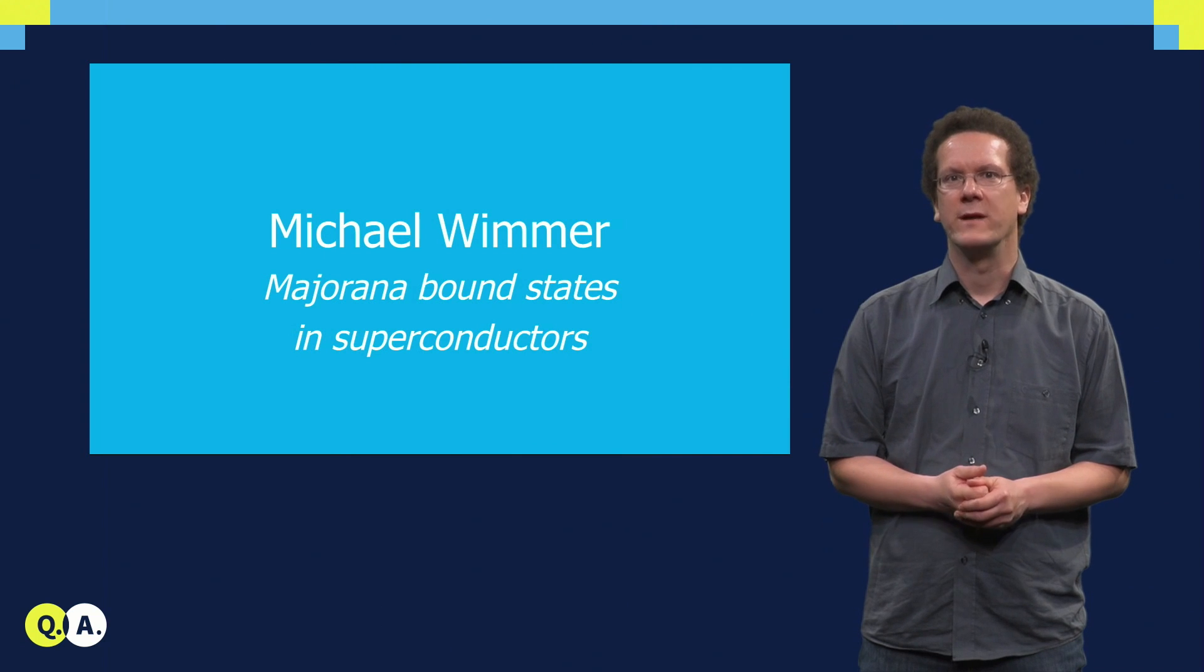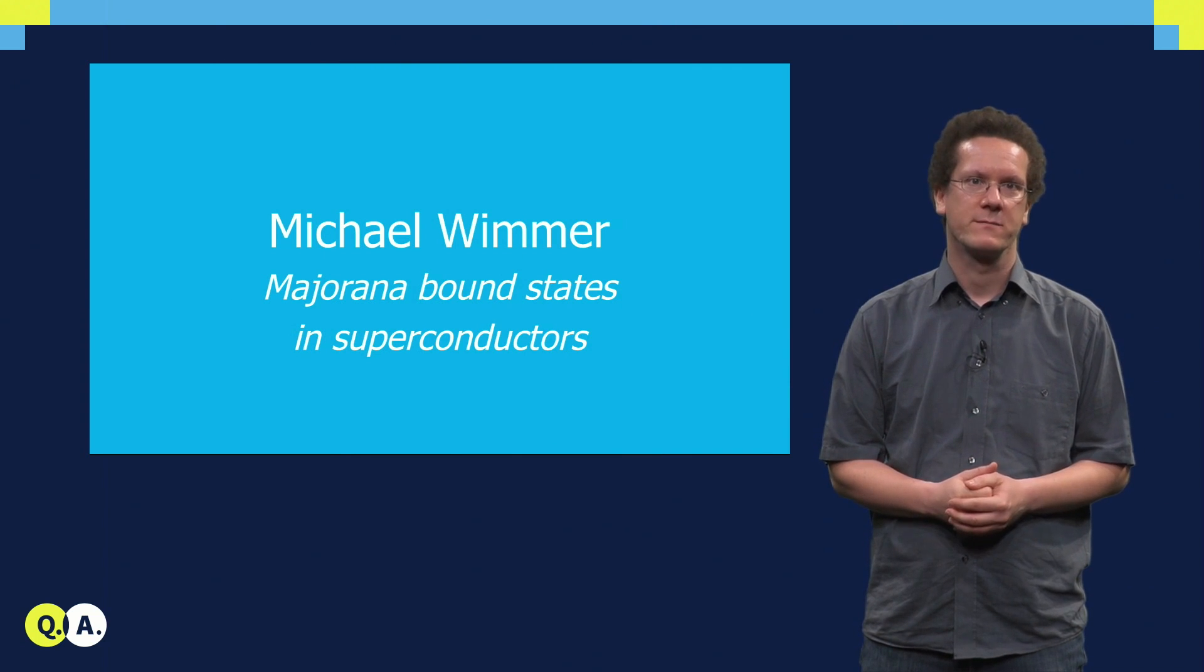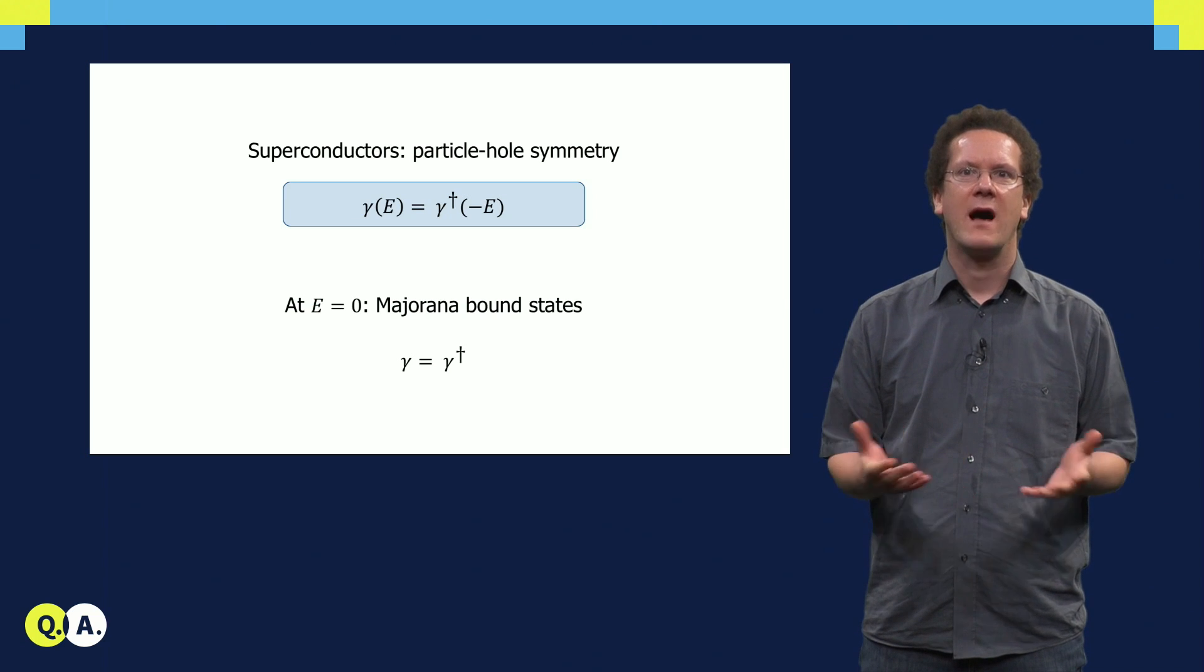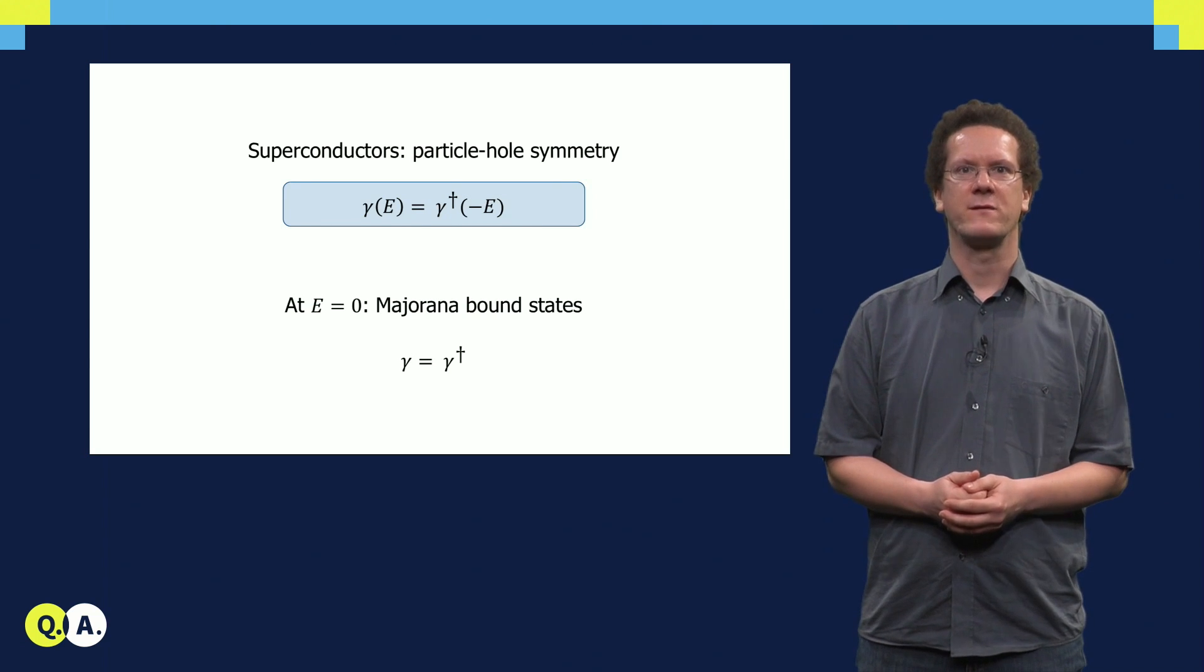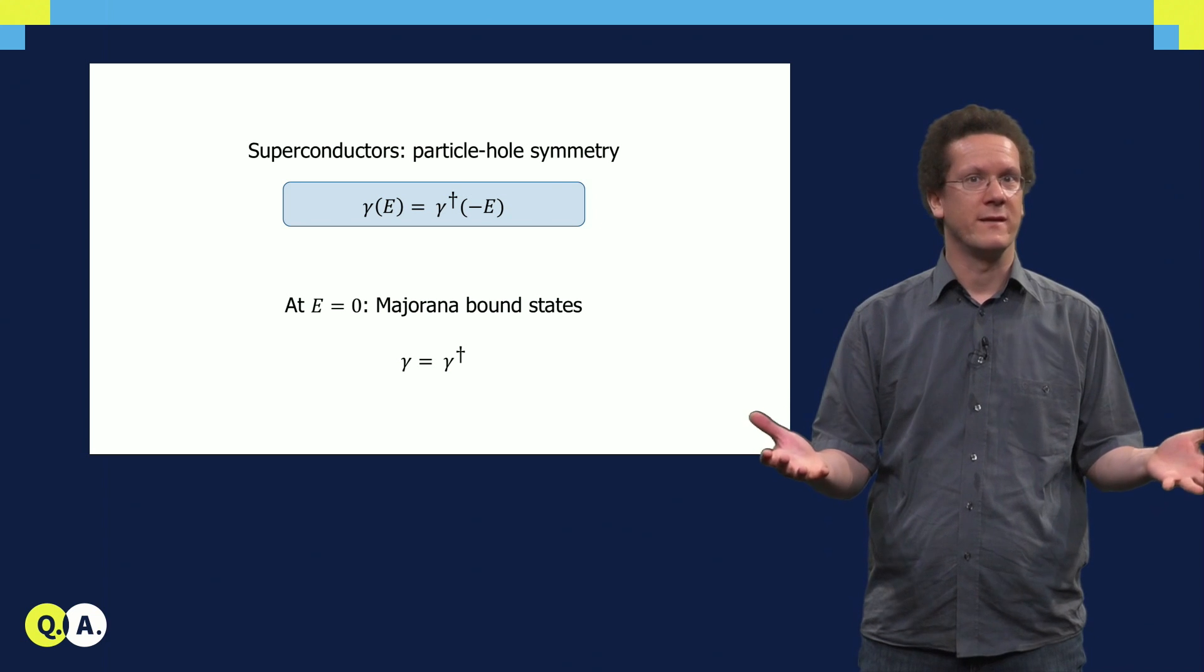Let us now look a little bit more in detail how we can find Majorana bound states in superconductors. I showed you in the last video that Majorana bound states can appear quite naturally there.